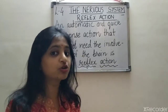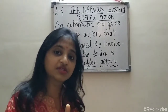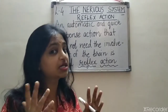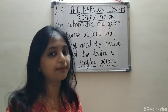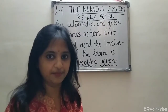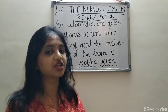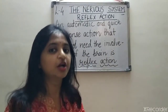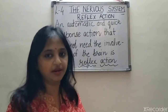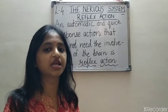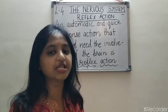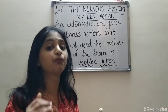The sensory nerves — we have studied there are 3 types of nerves: sensory nerves, motor nerves, and mixed nerves. Sensory nerves take the message from the sense organs to the spinal cord or brain. Motor nerves take the message from the brain or spinal cord to the sense organs. Mixed nerves involve both sensory and motor nerves.